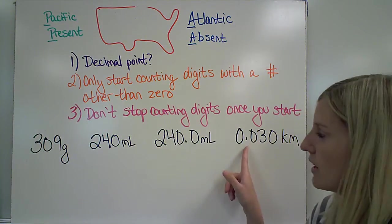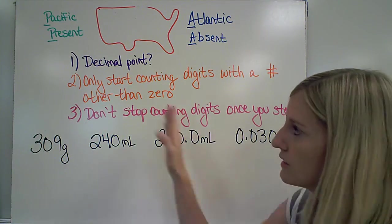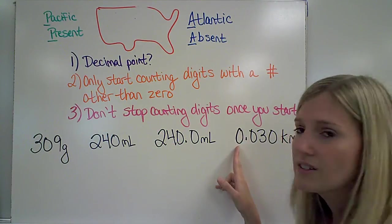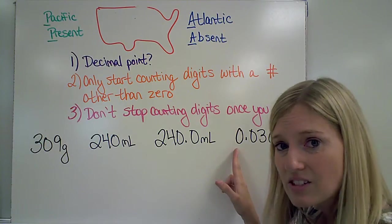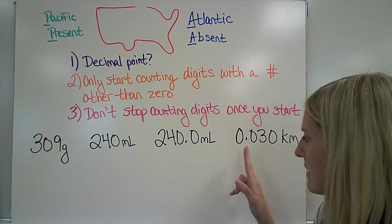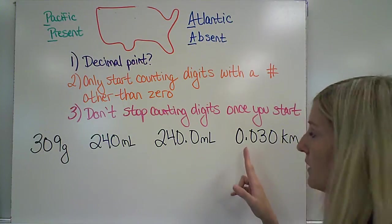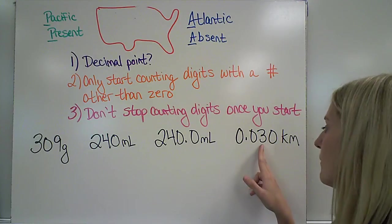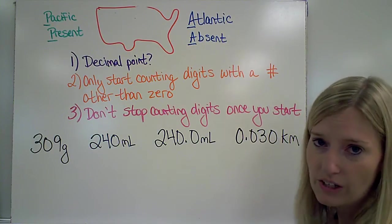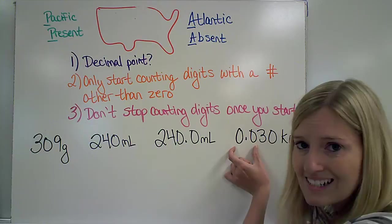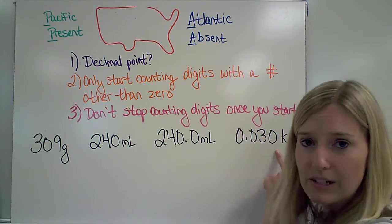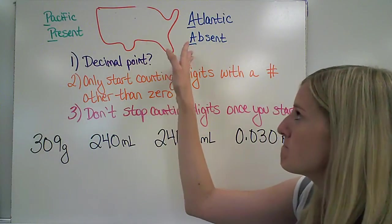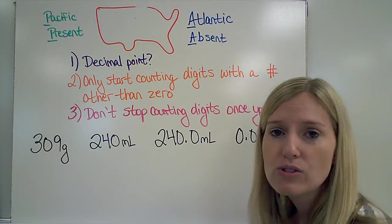My last number has a decimal point present, which means I'm going to start on the left-hand side of the number. I cannot start counting with a 0, though, so I'm going to skip that. I'm going to skip the next 0, but the next digit is a 3. So, I'm going to start counting with that one, and I have 1, 2 significant figures. Notice these 0s did not count, but this 0 does count. It all depends on which side you start on, and it depends on where you start counting.